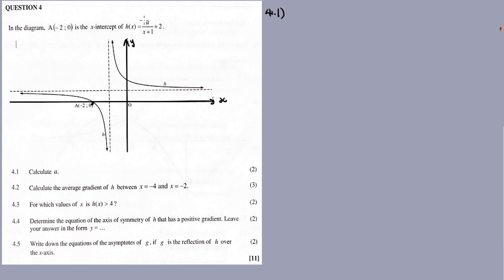In order to calculate A, I just need a point to substitute, so I'll calculate the value of A. So y is equal to A over x plus 1, plus 2. I'll use point A at negative two, zero, and substitute it in. So the value for y is 0.